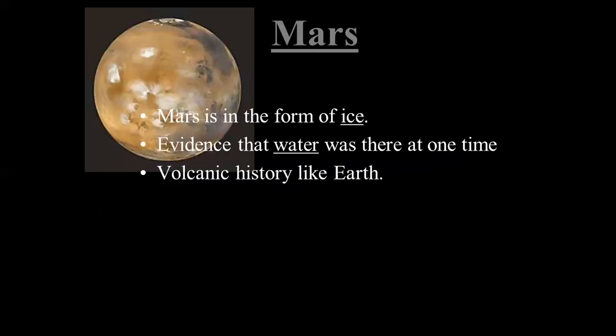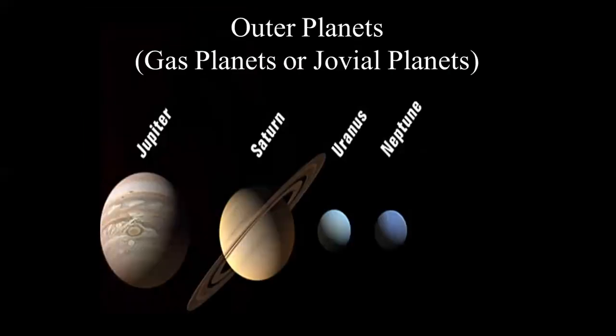Mars has water in the form of ice. There is evidence that water was there at one time. It is said that maybe Mars has consequences for life. It has volcanic history like Earth. After the inner planets, the outer planets are called gas planets and giant planets. There are four outer planets: Jupiter, Saturn, Uranus, and Neptune.